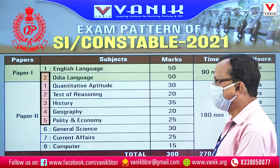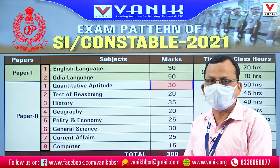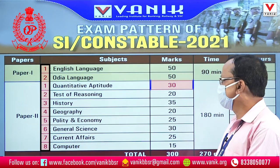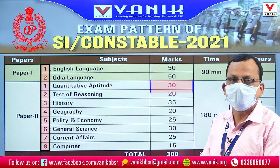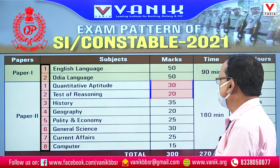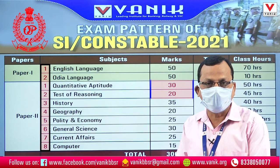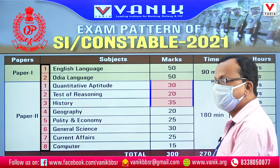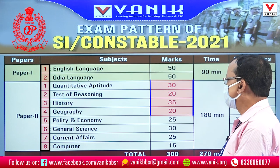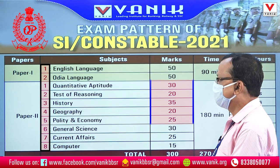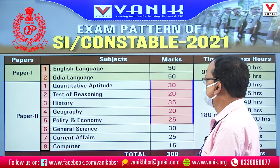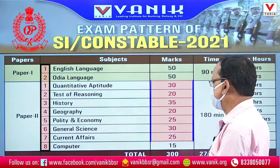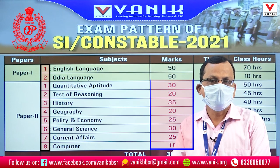We have the same sections. In the 8th section, we have a couple of questions added. We have aptitude, reasoning, quality and average questions, history, geography, policy and economy — 25 marks. General science is 30, current affairs is 25, and computer is 15.